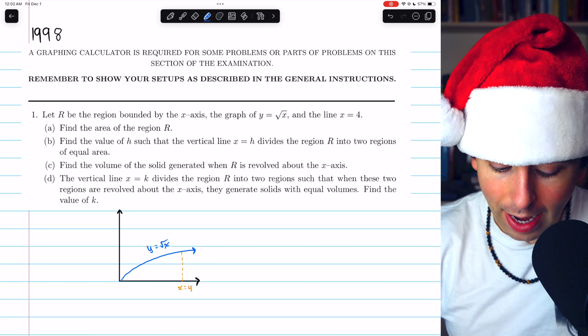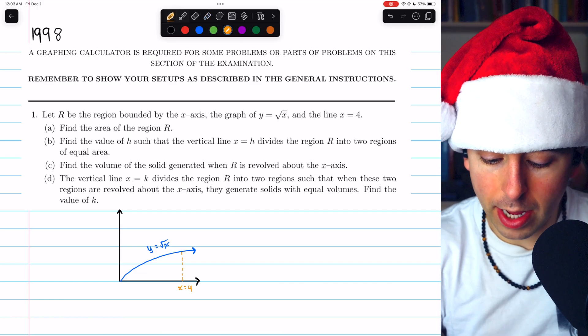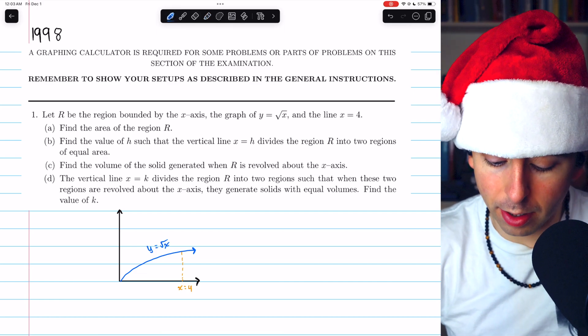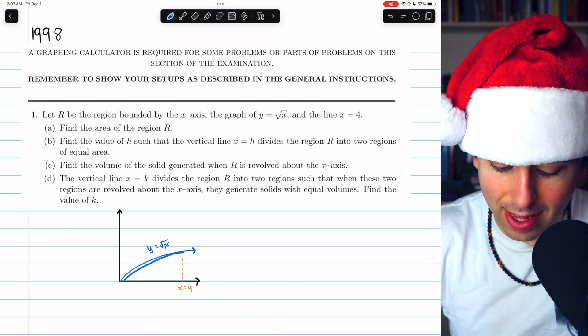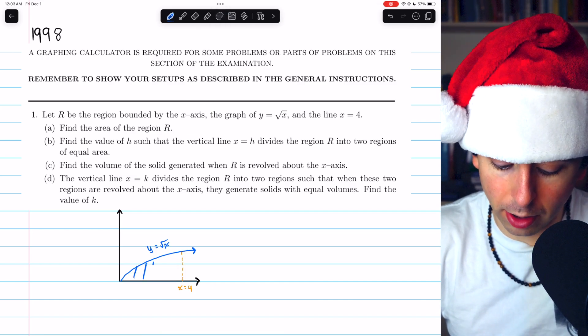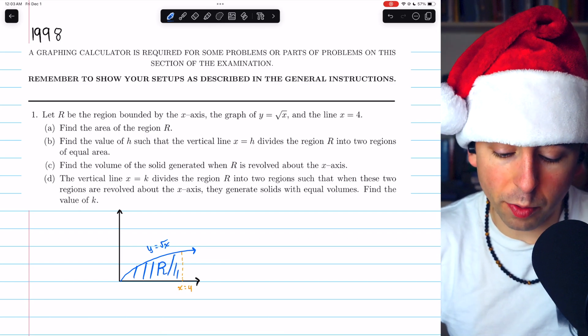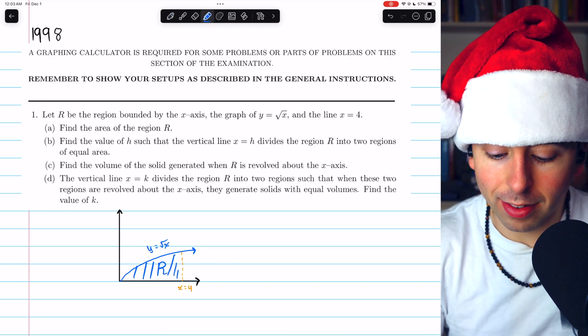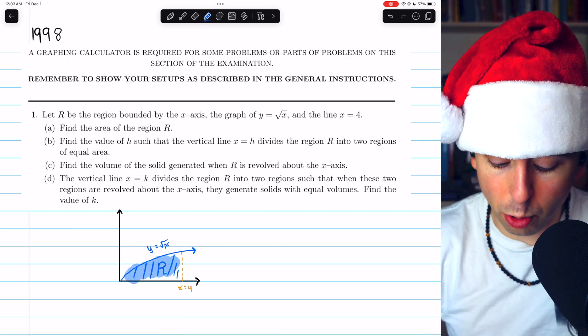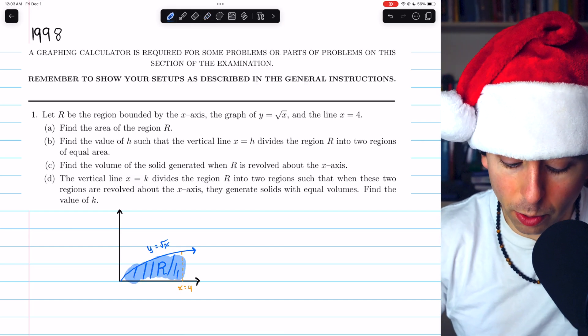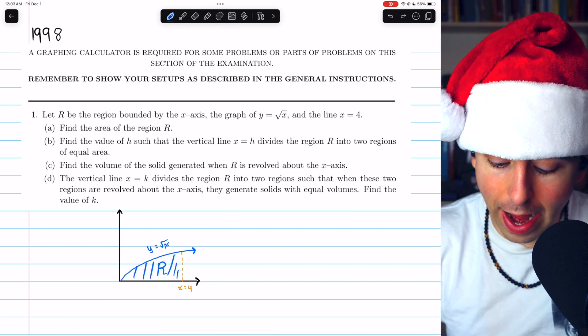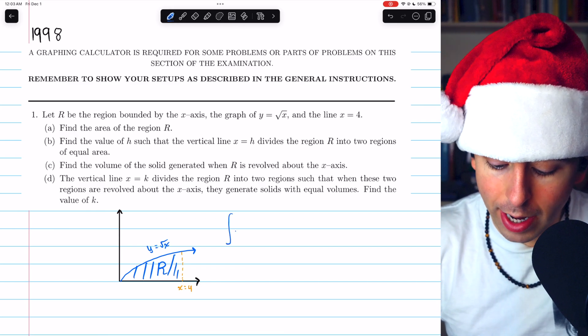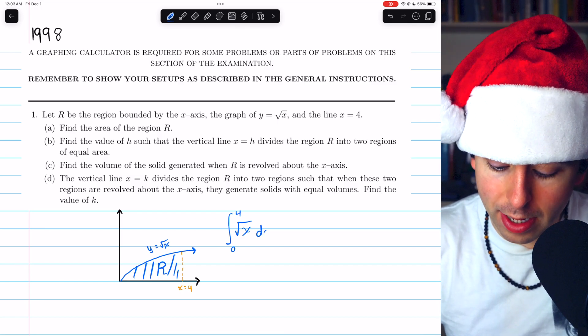So there is x equals 4. It's a vertical line. And so we are looking for the area of this enclosed region. Because remember, this region is also bounded by the x-axis, right? So it's this region here that we're looking for. This is the region R. We need to find its area. So that's just the area under the curve y equals root x from x equals 0 to x equals 4. So very simple for part A. We're just going to integrate our function, square root of x, from 0 to 4 to find the area underneath it.